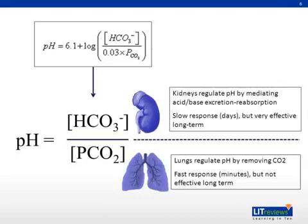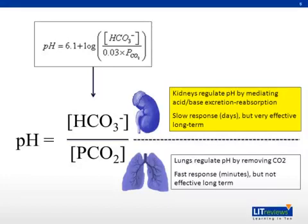The kidneys are important regulators of serum bicarbonate, whereas the pCO2 concentration is largely regulated by the respiratory system. The kidneys regulate pH by mediating acid-base excretion and reabsorption, and although this response is slow — usually taking days — it is very effective in the long term. The lungs, on the other hand, regulate pH by removing CO2. This is a fast response, taken within minutes, but not very effective long term.